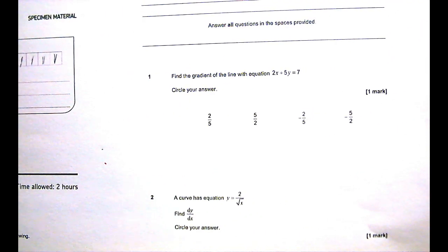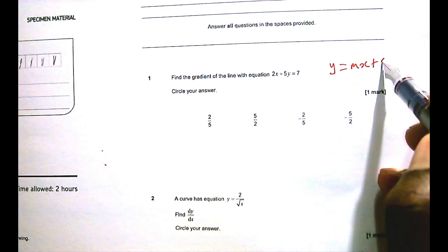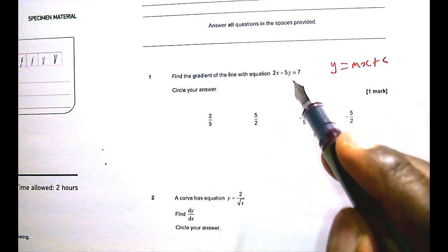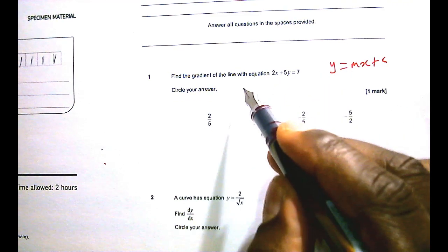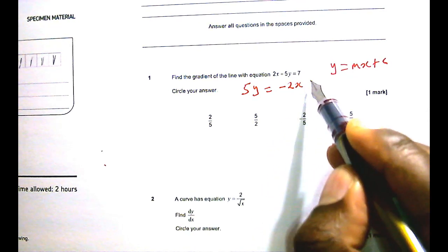Question one says: find the gradient of the line with equation 2x plus 5y equals 7. I'm not really happy with the way this equation has been written. I would like to write it in the form I am used to. So, what can I do to make y the subject? First and foremost, get 2x to the other side. So that becomes 5y equals negative 2x plus 7.